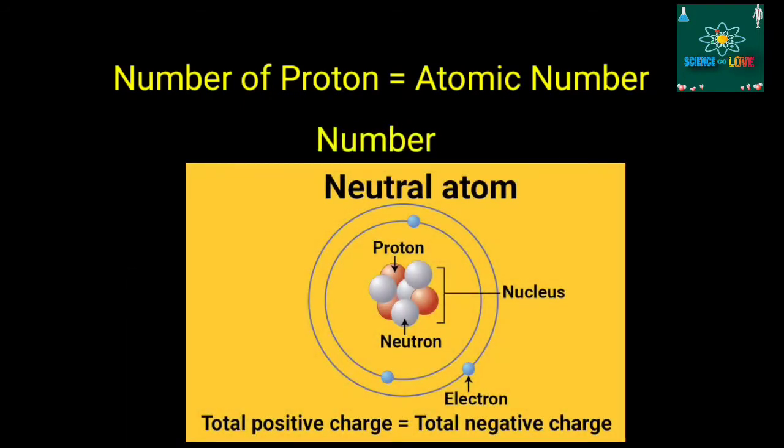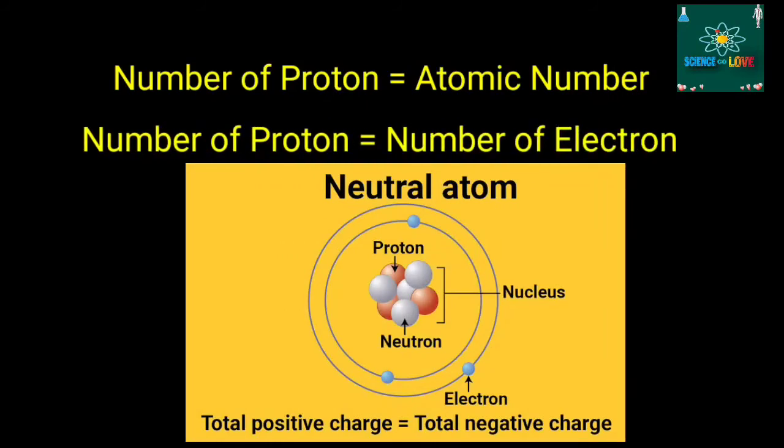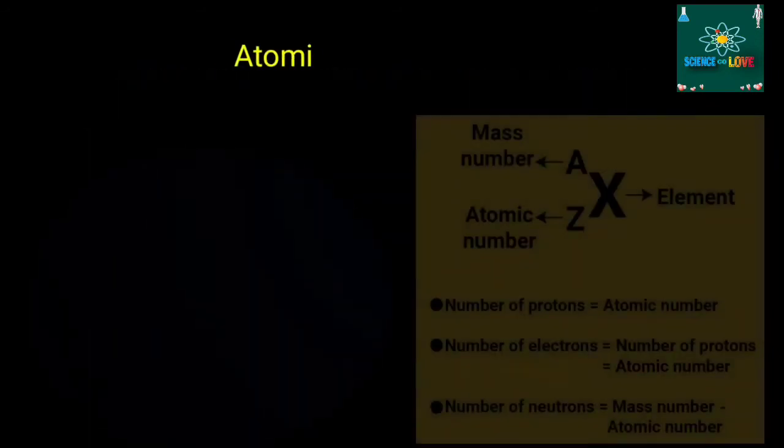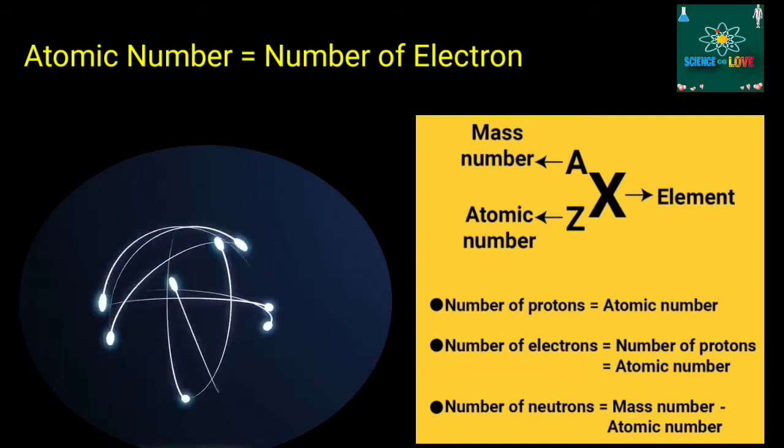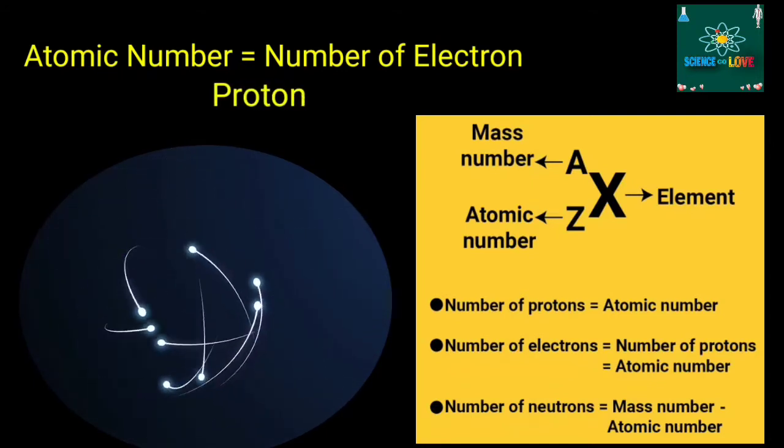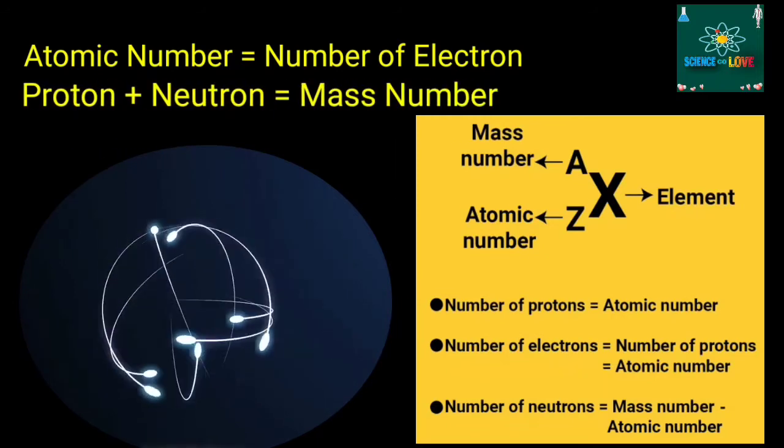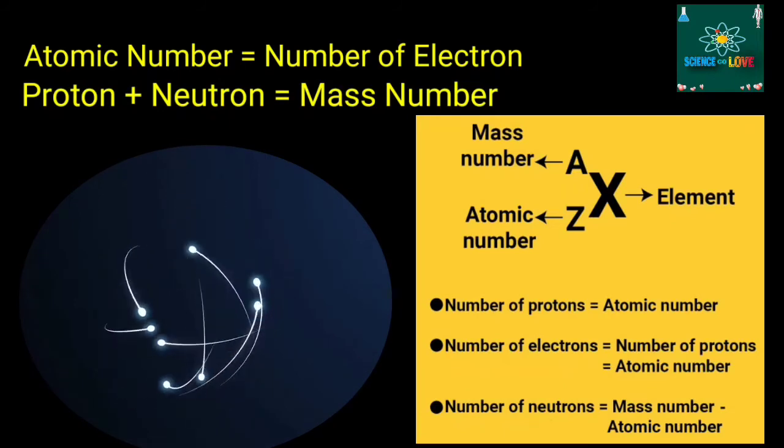A neutral atom holds an equal number of protons and electrons. The atomic number also indicates the number of electrons in that atom. Meanwhile, the mass number is the sum, or the total number, of protons and neutrons in an atom.